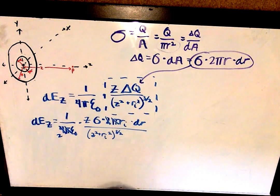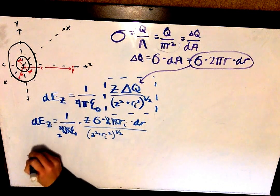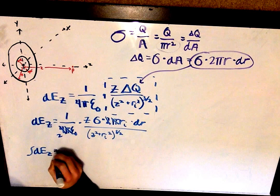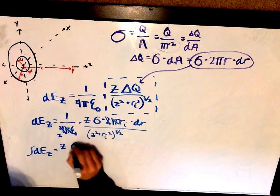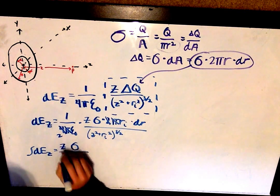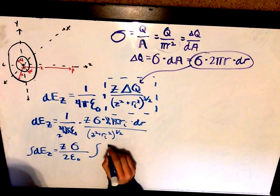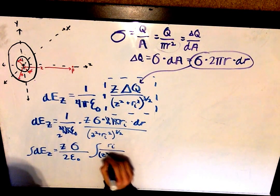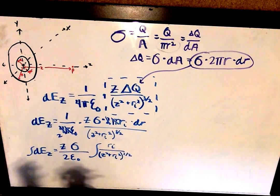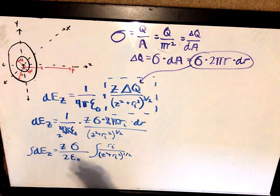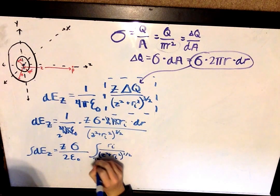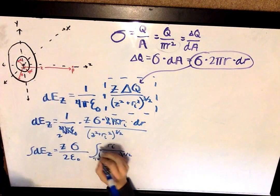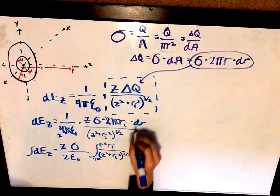Now it is time to integrate this function to get the full electric field instead of just the small portion. Integrating both sides, we get the integral of dEz on the left. Pulling out all constants outside the integral, we get z times area charge density all over 2ε₀, times the integral of r over (z² + Ri²) to the 3/2 dr. The bounds go from Ri equals 0 at the center out to Ri equals R.